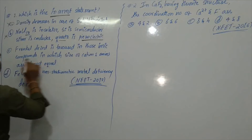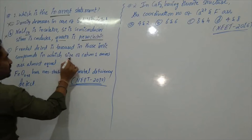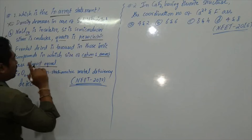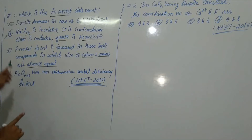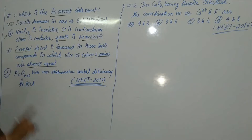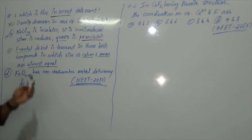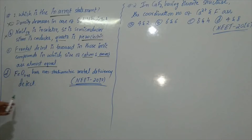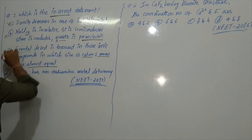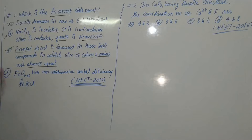Let's check option C: Frenkel defect is favored in ionic compounds in which the size of cation and anion are almost equal. This is wrong. In Frenkel defect, there must be a difference between the size of the cation and anion. So this is our incorrect statement and is our answer.